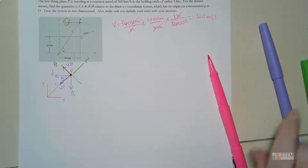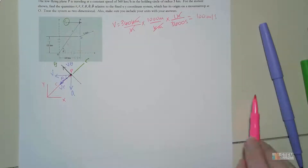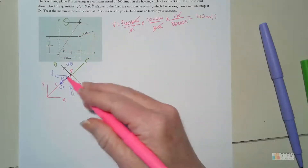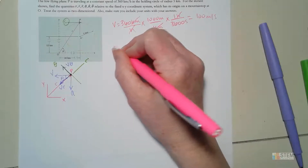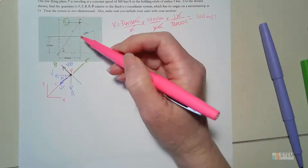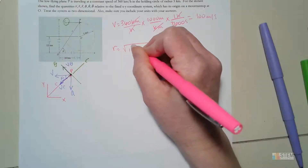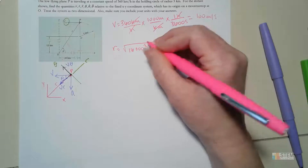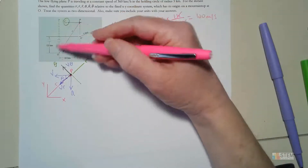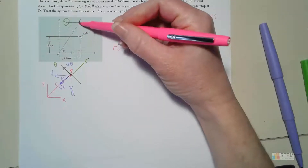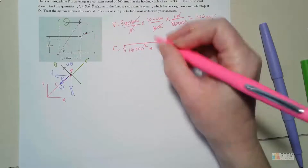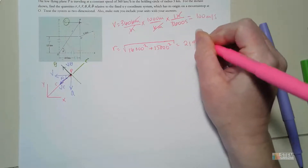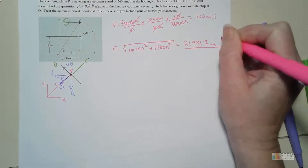Let's find r first. R is the square root of the horizontal distance squared plus the vertical distance squared. In meters: √(16,000² + 15,000²) — the 15,000 comes from 12 + 3 kilometers converted to meters, since we're on a circle of radius 3. That gives r = 21,931.7 meters.